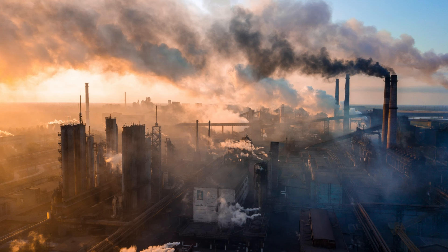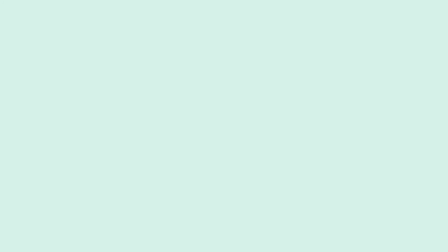This results in the equilibrium outcome being inefficient from the standpoint of society as a whole. Market power and externalities are examples of market failures — the inability of some unregulated markets to allocate resources efficiently.